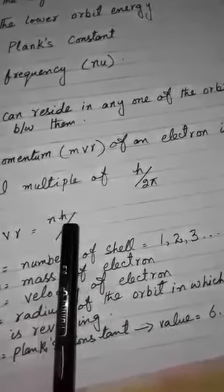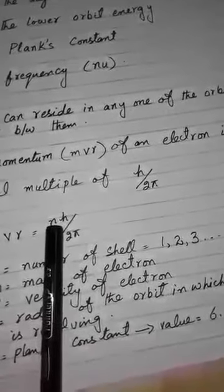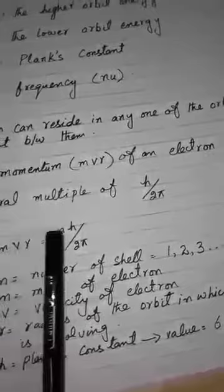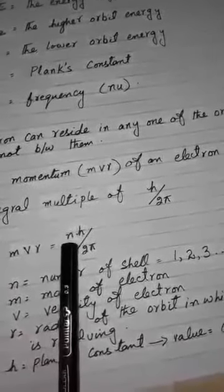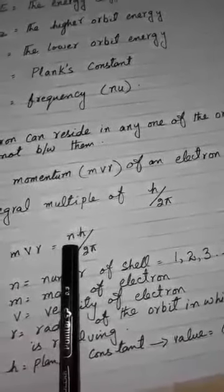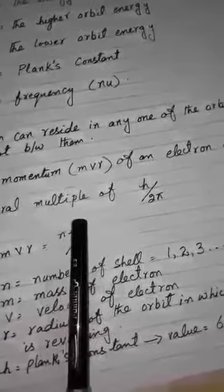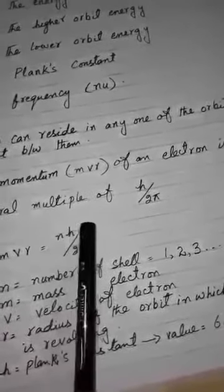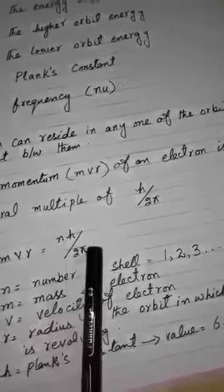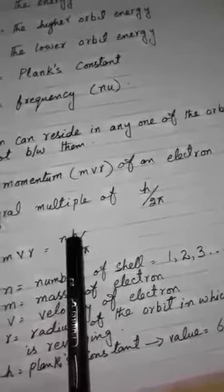If suppose we are taking the angular momentum of the electrons residing in the fourth shell then we will take n as 4. We will multiply h divided by 2π with 4 and it will certainly have much higher value than the angular momentum of the electron residing in the third, second or first shells.